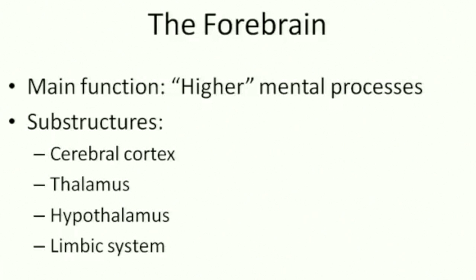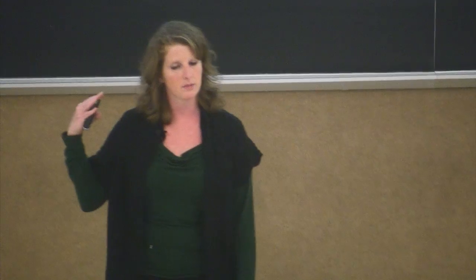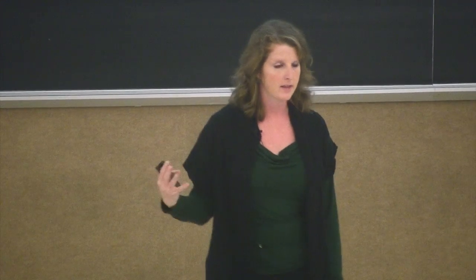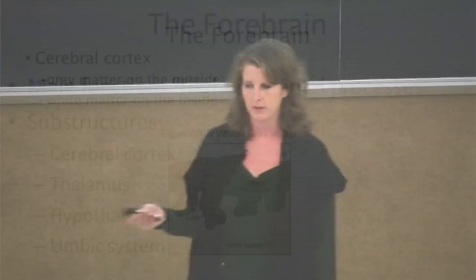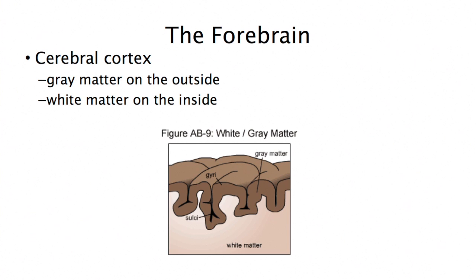The substructures of the forebrain we'll focus on are the cerebral cortex, the thalamus, the hypothalamus, and the limbic system. The forebrain is full of different nuclei that mediate different behaviors, but these are the ones we'll focus on for the purposes of this class.